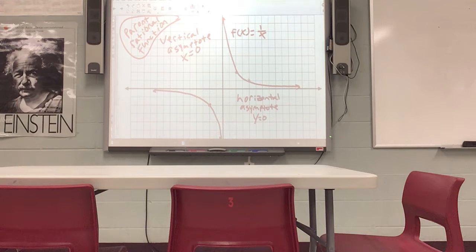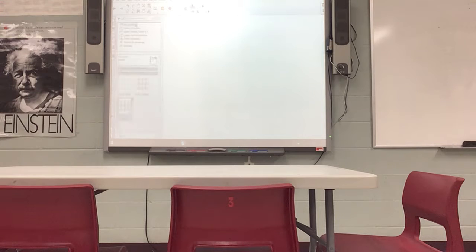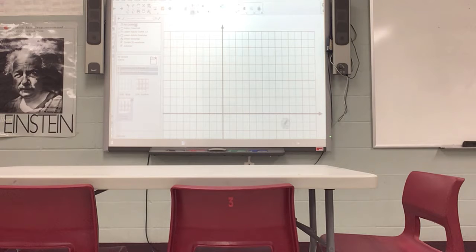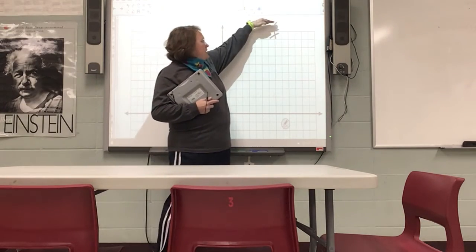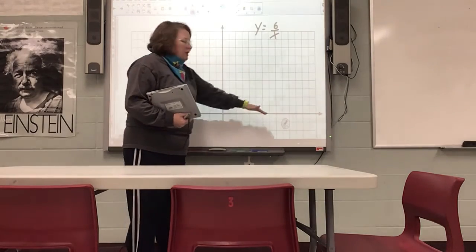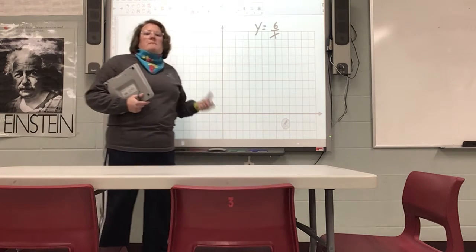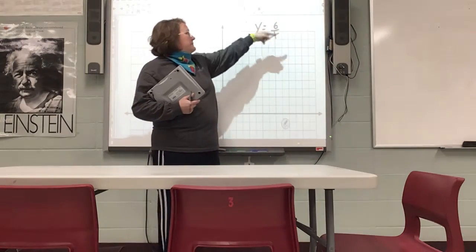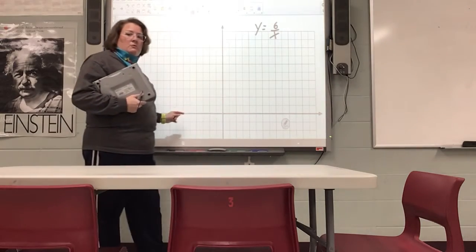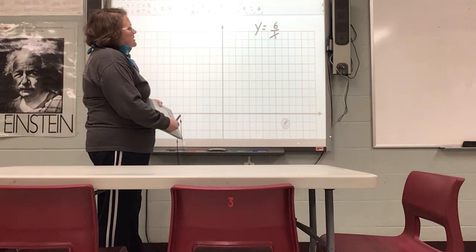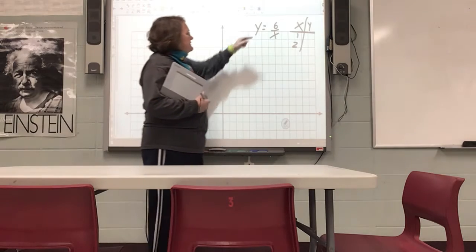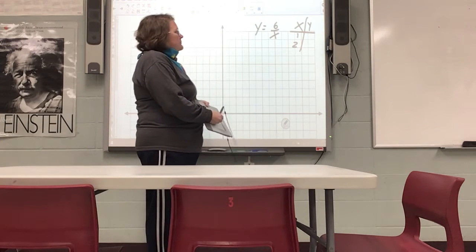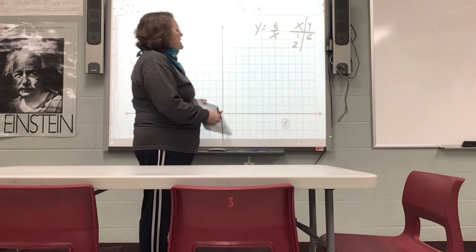Let's graph the function y equals 6 over x. This is the same form as the parent function, so my asymptotes are just going to be the axes — there's nothing extra happening, just a single term on the numerator being divided by x. To find a couple of points, I'll plug in x equals 1: 6 divided by 1 is 6, giving me the ordered pair (1, 6). Plugging in x equals 2: 6 divided by 2 is 3, giving me the ordered pair (2, 3).